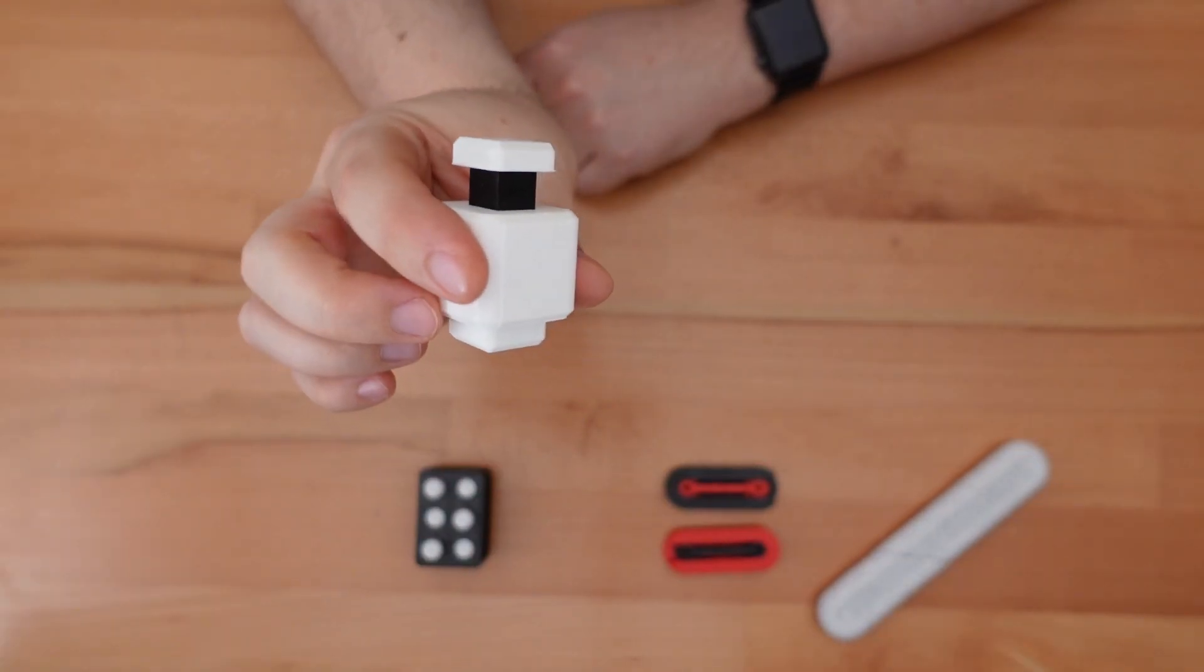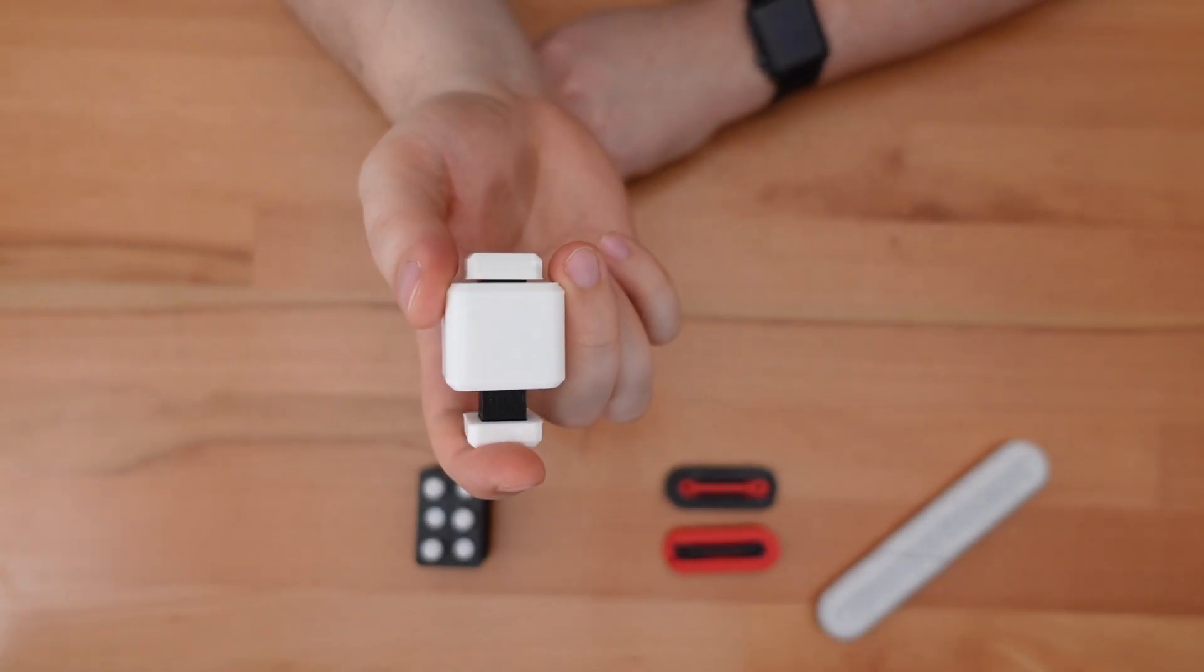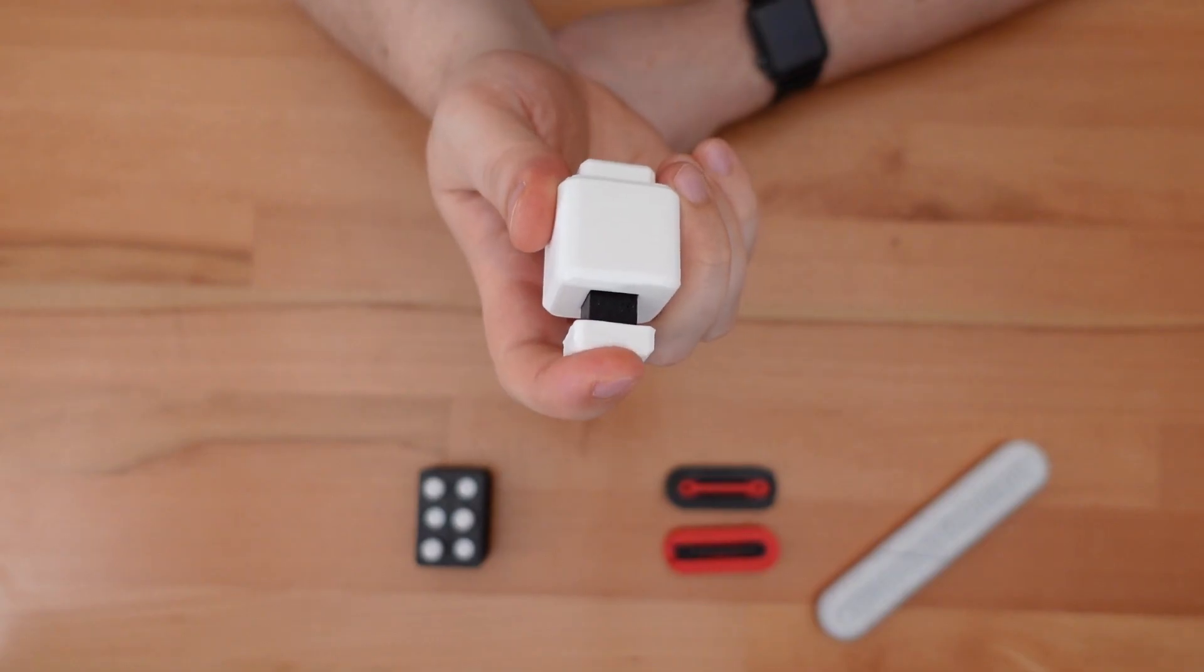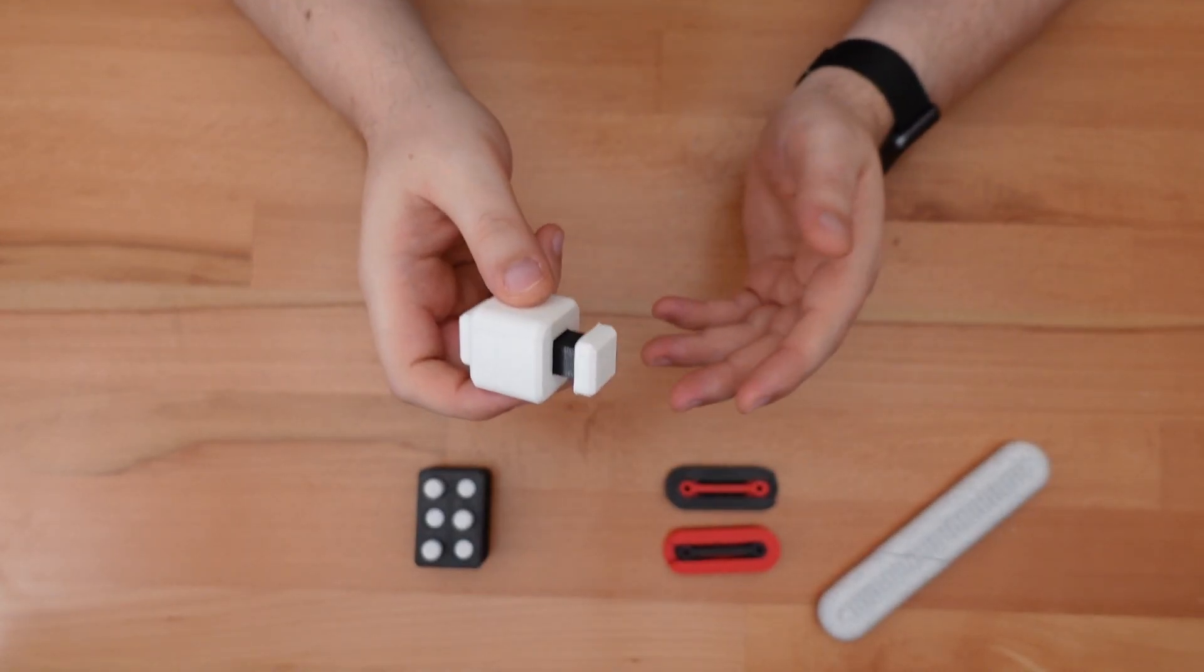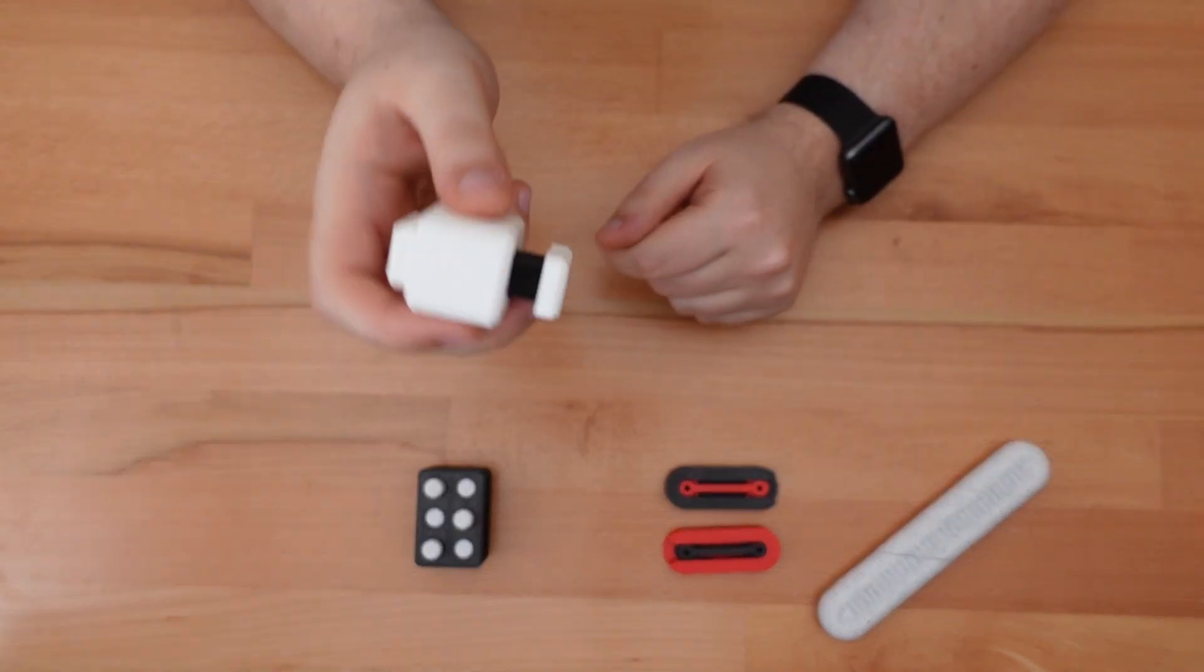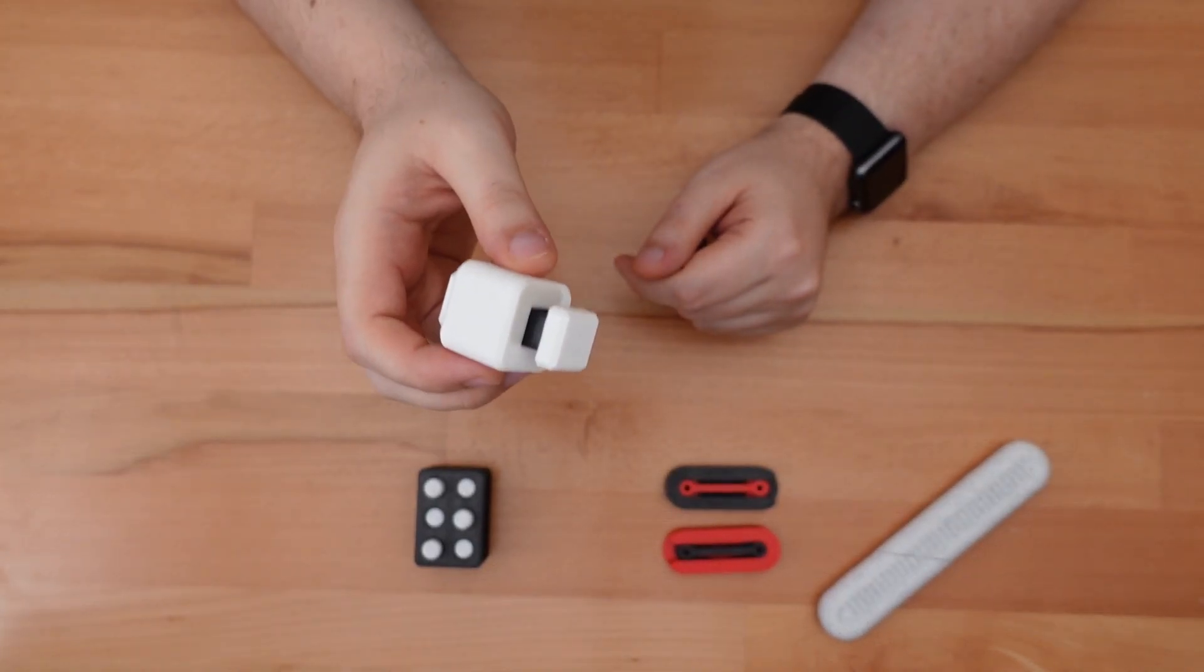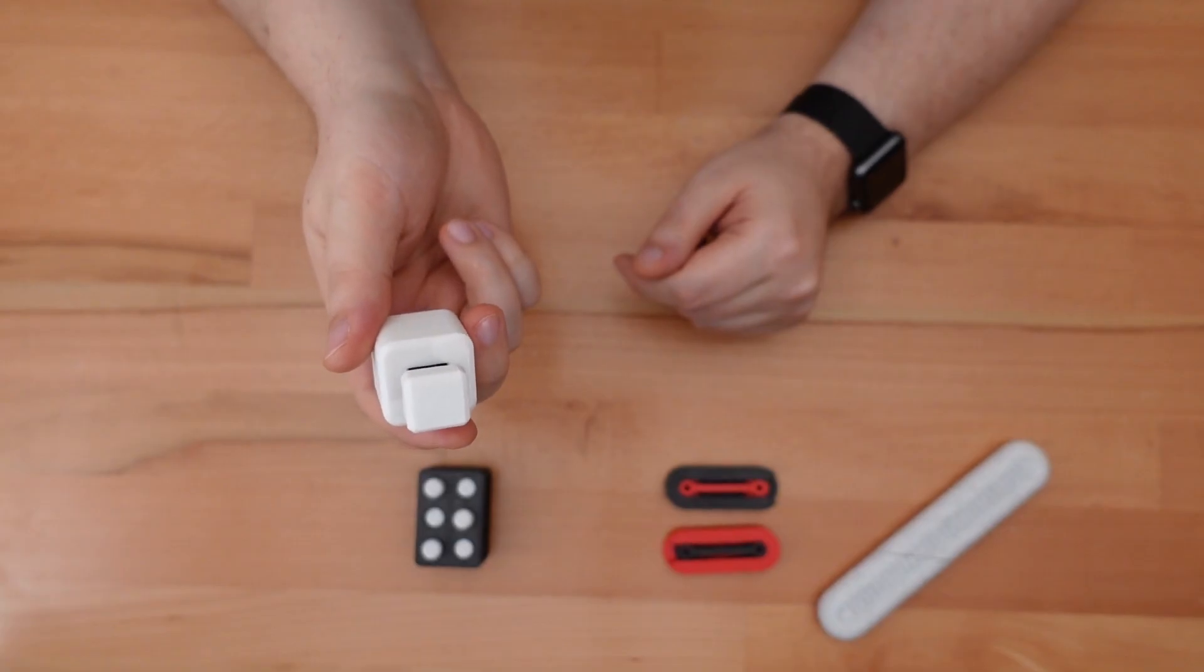Next is another fidget update. This snappy fidget toy uses a small spring to snap between button states. The snap action is pretty intense. So intense that the buttons could pop right off. To get around this, I used a very strong gel glue, but now there's another option.